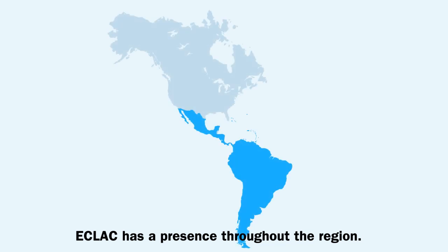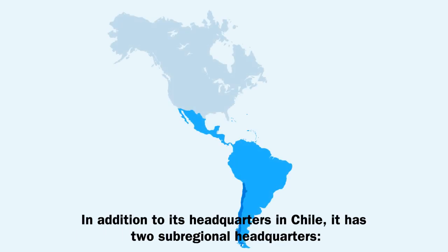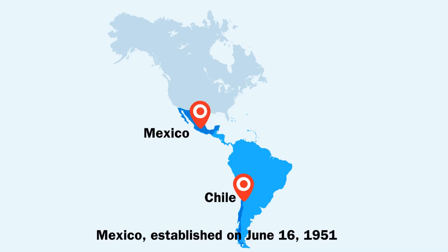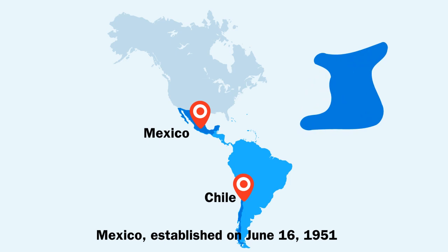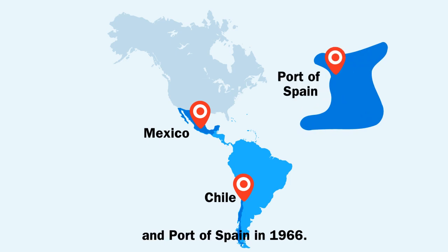ECLAC has a presence throughout the region. In addition to its headquarters in Chile, it has two sub-regional headquarters: Mexico, established on June 16, 1951, and Port of Spain in 1966.